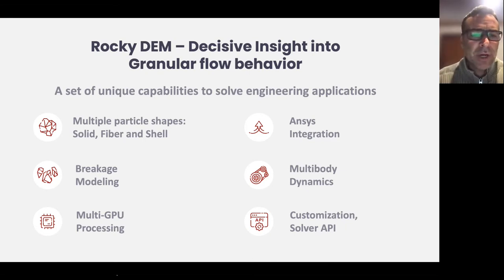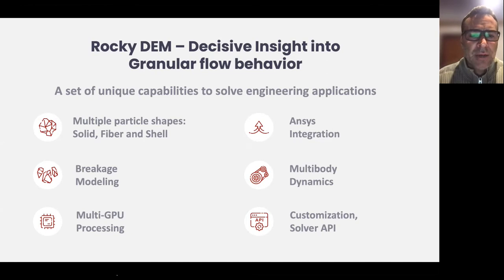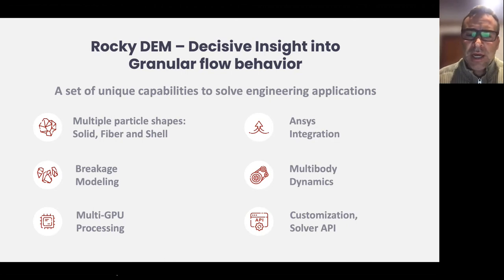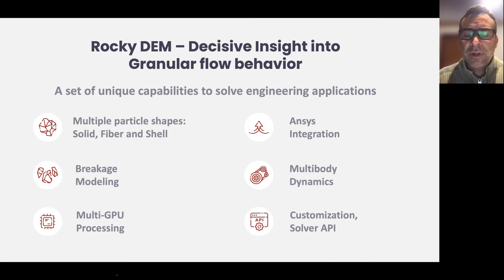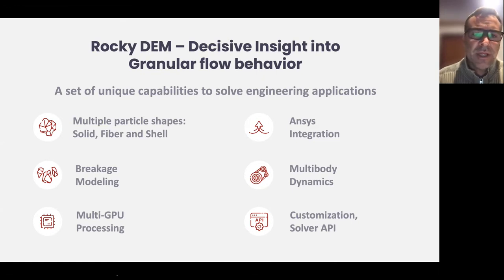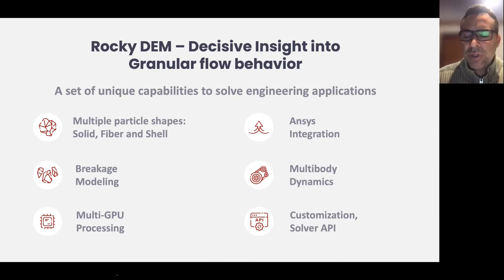Rocky is known for its multiple particle shapes: 3D particles, generic polyhedral solids, fibers — widely used in the agricultural industry, food industry, and automotive industry — and shells. Also breakage modeling, multi-GPU processing, Ansys integration, and a multi-body dynamics capability. Most equipment that handles material has complex motion mechanisms, so we have a multi-body dynamics solver in the code, plus capability to connect to other multi-body codes and a large customization API.